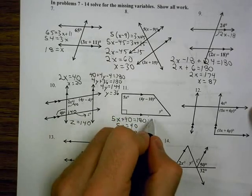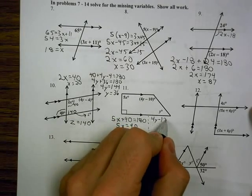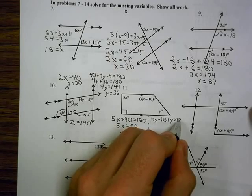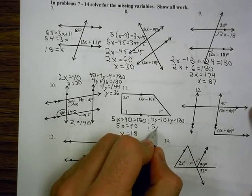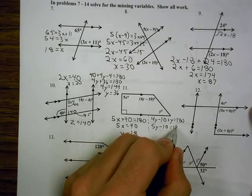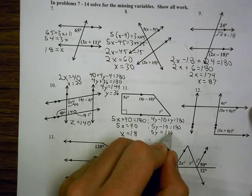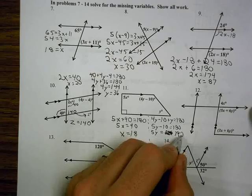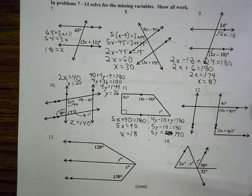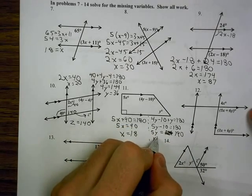And then for the right half, 4y minus 10 plus y equals 180. That's 5y minus 10 equals 180. 5y equals 190. And then I divide 190 by 5, and I get 38.